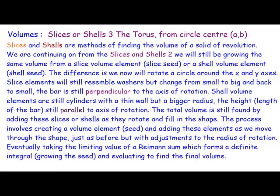Welcome to Maths with Bob. Today we're looking at, following on a series of volumes, Slices and Chills 3, and today we're looking at a particular shape called a torus — a bit like a doughnut. We're going to be rotating a circle around the X and Y axis. We'll be looking at the seeds and growing the volume; these seeds are actually volume elements, and from the volume elements we can grow what's called the total volume.